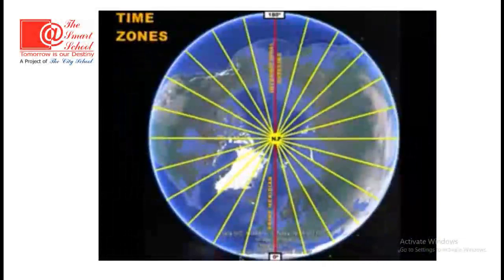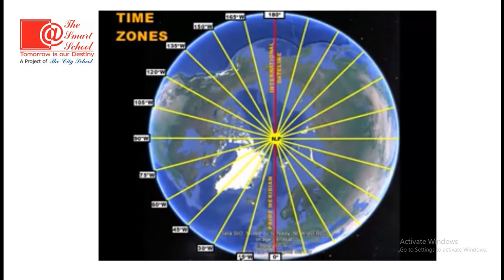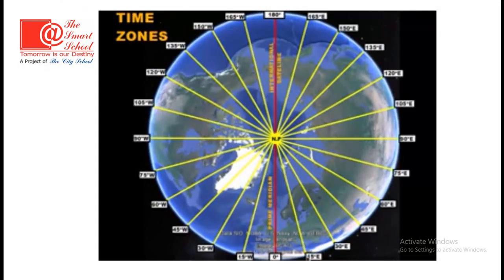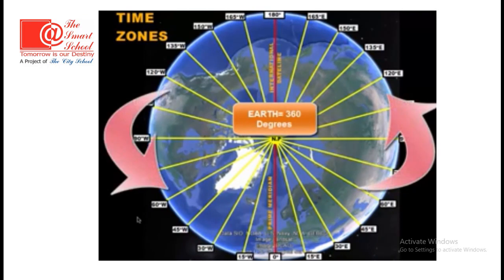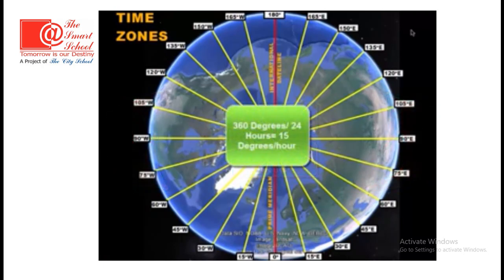Each time zone is actually 15 degrees of longitude wide. In the western hemisphere, all degrees are labeled with W's, and in the eastern hemisphere, the 15-degree multiples are labeled east. The reason a time zone is 15 degrees is because scientists took the total angular measurement of earth — 360 degrees, the shape of a sphere — and divided it by the 24 hours it takes the earth to rotate one complete time. So 360 divided by 24 equals 15, meaning the earth rotates 15 degrees an hour.